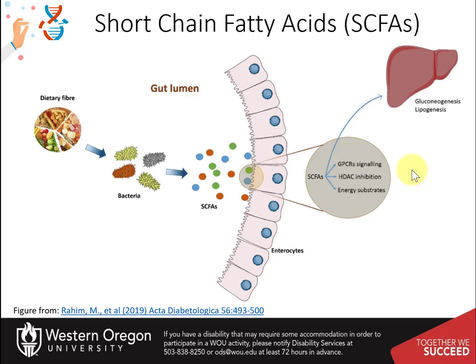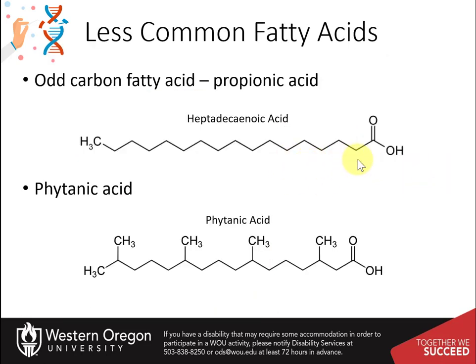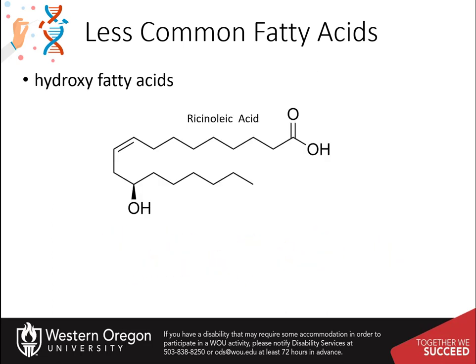Odd-chain fatty acids are found particularly in ruminant fat and milk — for example, heptadecanoic acid. Some plant-based fatty acids also have an odd number of carbon atoms, and phytanic fatty acid absorbed from plant chlorophyll has multiple methyl branches. Ricinoleic acid is a major component of the seed oil from the mature castor plant; it exerts analgesic and anti-inflammatory effects and can also act as an algaecide for the control of cyanobacterial growth.